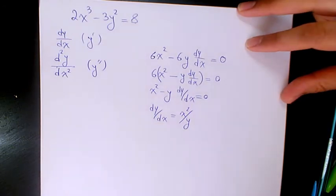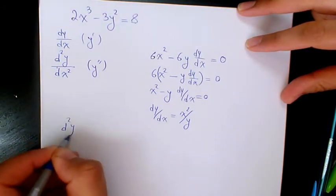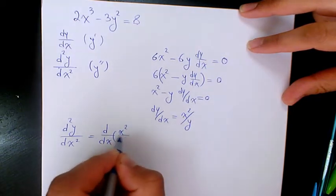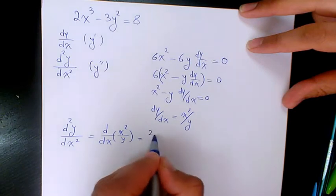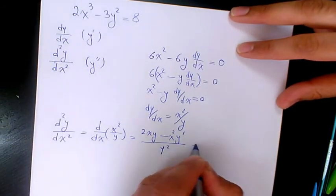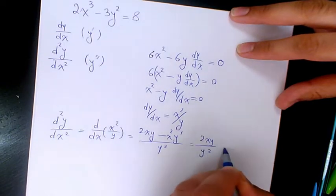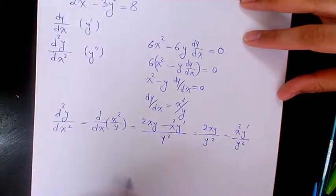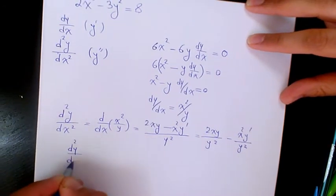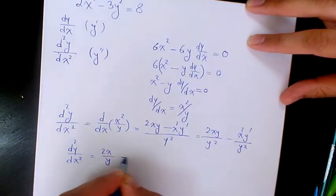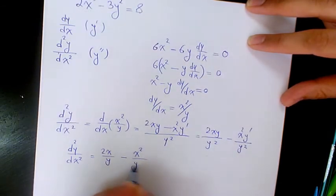Now we find the second derivative d²y/dx², which is the derivative of x²/y. Using the quotient rule, that's (2xy - x² y') divided by y². Separating the terms gives 2xy/y² minus x² y'/y².